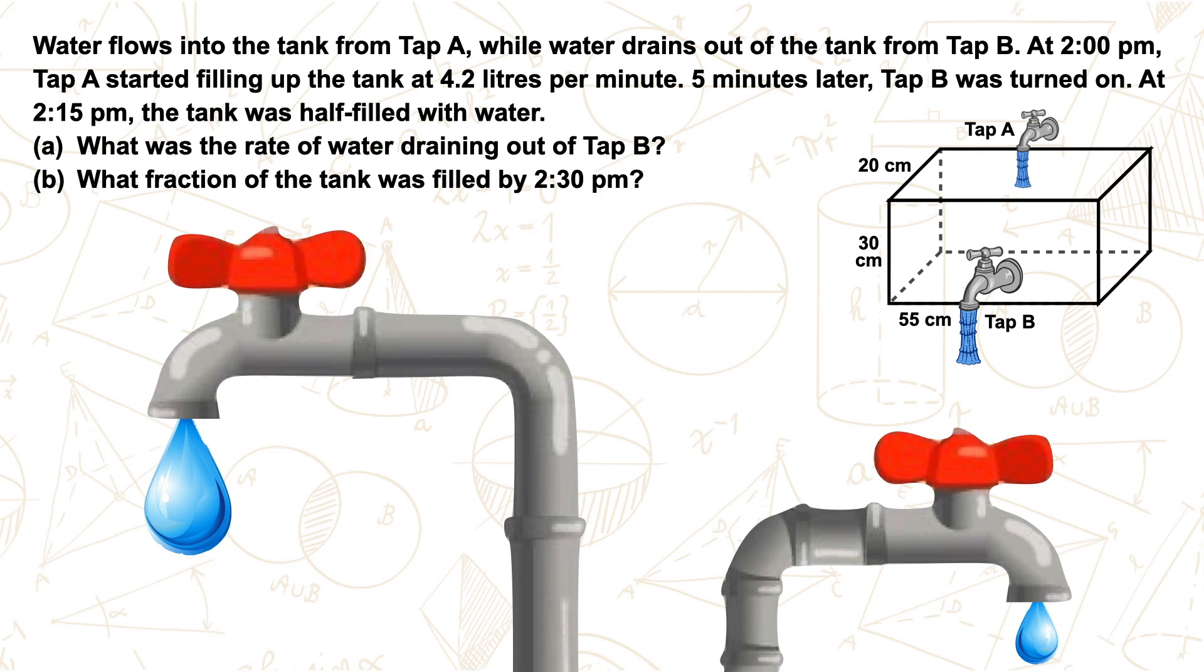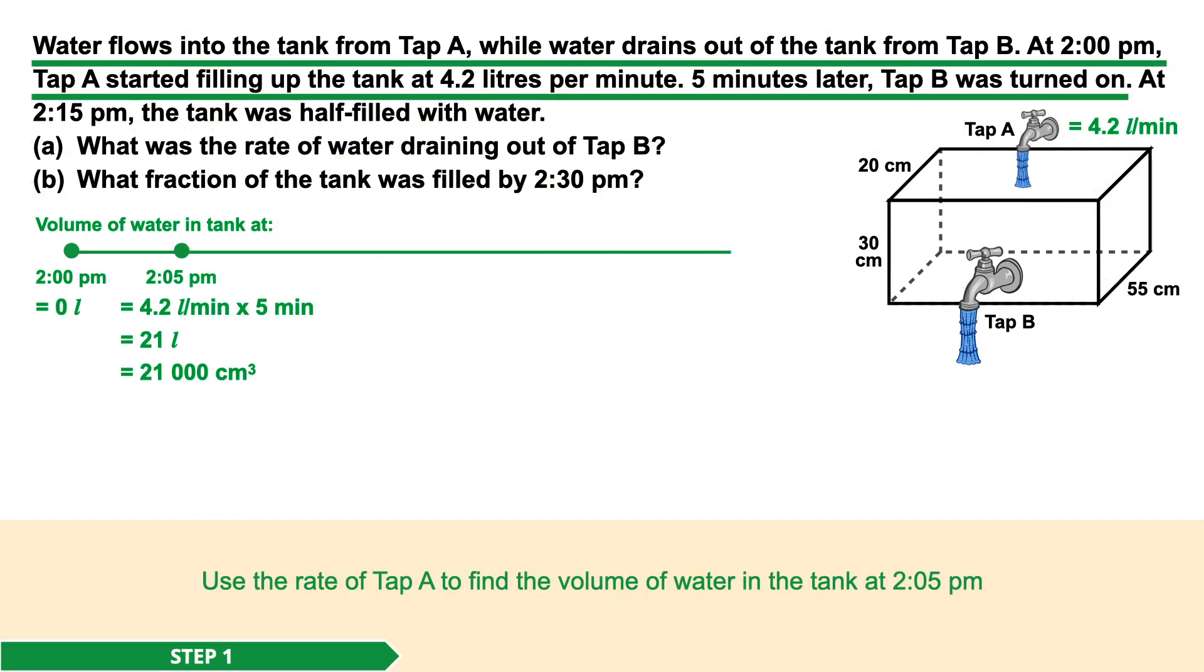To start, let's read the question. Water flows into the tank from tap A, while water drains out of the tank from tap B. At 2:00 p.m., tap A started filling up the tank at 4.2 liters per minute. Five minutes later, tap B was turned on. At 2:15 p.m., the tank was half-filled with water. (a) What was the rate of water draining out of tap B? (b) What fraction of the tank was filled by 2:30 p.m.?